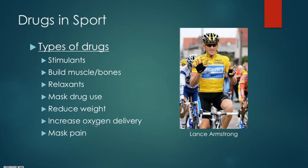Some drugs such as diuretics and plasma expanders are used to cover up the fact that an athlete is taking drugs in the first place, so that it doesn't show up on their drugs test. Diuretics also allow athletes to lose weight through urination — particularly popular in boxing as they need to fall into a certain weight category.